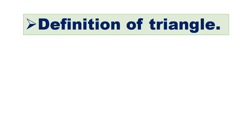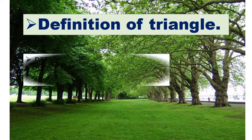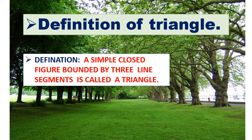Definition of triangle. What is a triangle? A simple closed figure bounded by three line segments is called a triangle.